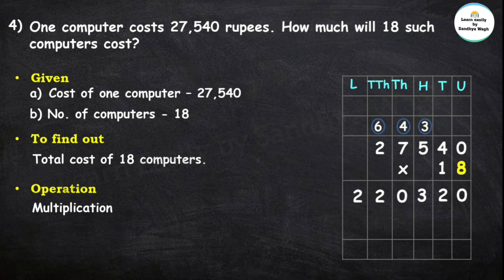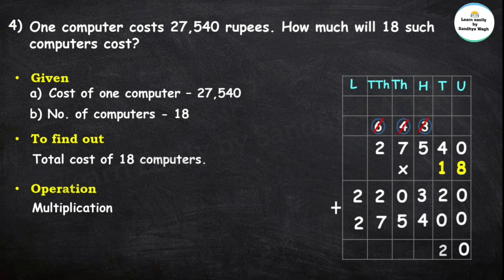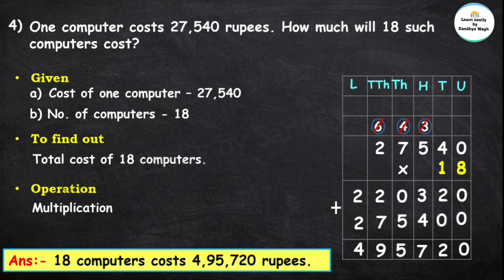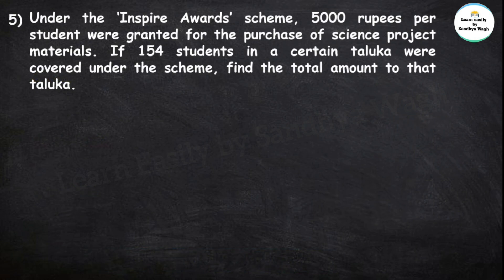Now we multiply by 1. Since 1 is in the tens place, write 0 in the unit place. 1 zero is 0, 1 four is 4, 1 five is 5, 1 seven is 7, 1 two is 2. Let's add these numbers: 0; 2 plus 0 is 2; 3 plus 4 is 7; 0 plus 5 is 5; 2 plus 7 is 9; 2 plus 2 is 4. So here our final answer is: 18 computers cost 4,95,720 rupees.